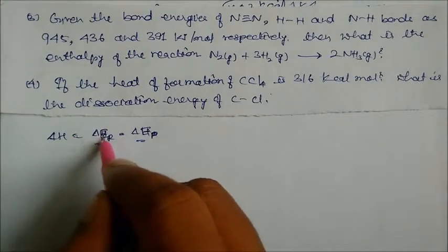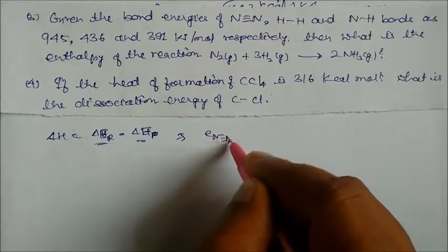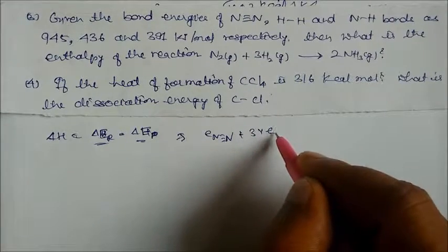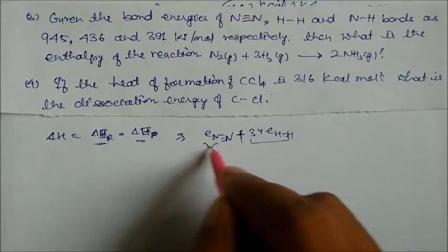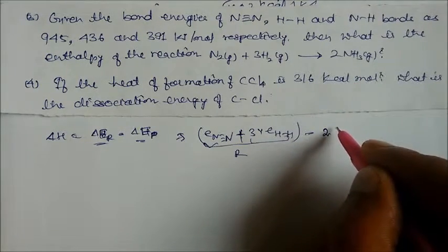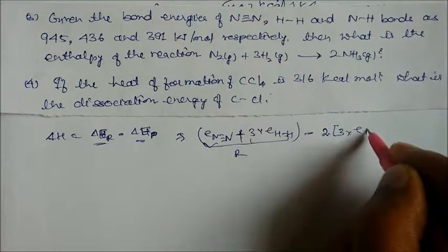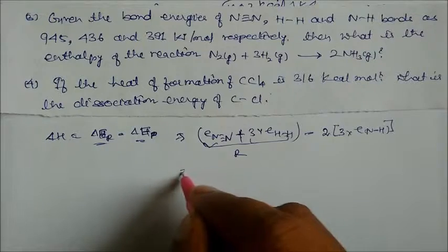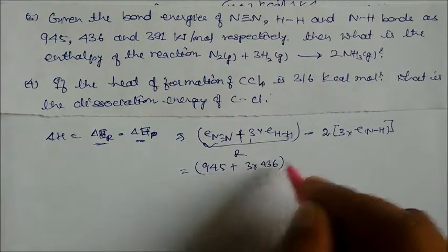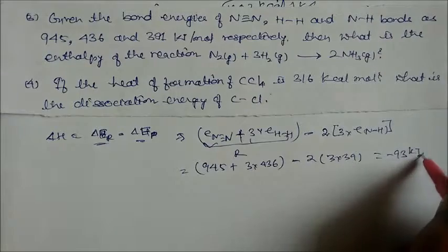Delta H = [E(N₂) + 3 × E(H₂)] − [2 × 3 × E(N-H)]. Substituting: 945 + 3 × 436 minus 2 × 3 × 391. On solving, we get delta H = −93 kilojoule. So this is our answer.